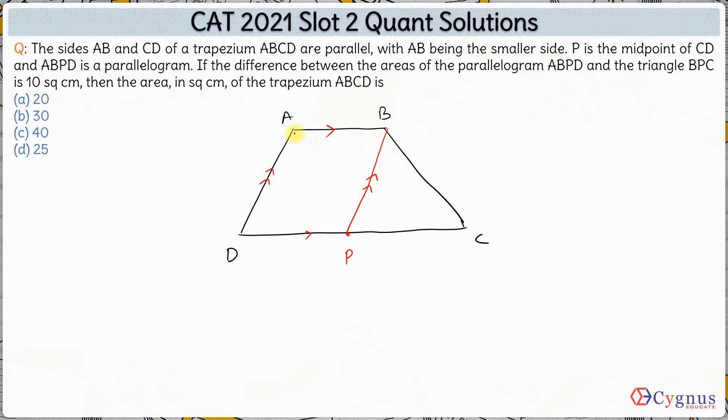Now let us draw the diagonal AP for the parallelogram ABPD. We know in a parallelogram the diagonal divides the parallelogram in two equal halves. So if this is x, this will also be equal to x. This will also be x.